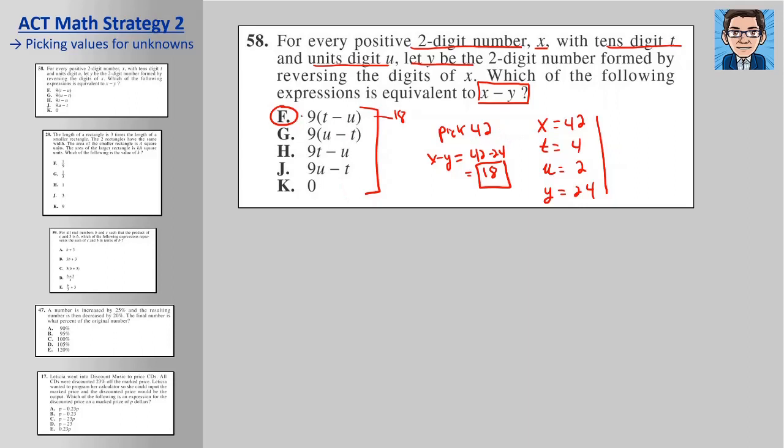Now, we've got to check all of them because sometimes you pick numbers. You don't want to pick numbers that are too easy, like 0 and 1. You want to pick easy numbers, but not numbers that are too easy because it might work for multiple ones. So rather than just picking the first one we get to, we just have to take a quick look and make sure that none of the other ones for these particular numbers that we picked is going to work. So if we just run down U minus T, that's going to get us negative 18. So that one doesn't work. 9 times T is going to be 36. 36 minus 2, that's not going to be 18. 9 times U is 18 minus 4, that's not going to be, and it's not 0 either. So you just have to go and check the other ones rather than just automatically picking the first one that you find. But F is going to be our answer here.